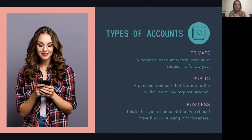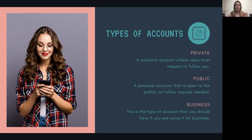There are three types of Instagram accounts. You can have a personal private account where you have to request to follow someone and they have to give you permission — that's a private account. You can also have a personal public account, which means people don't have to request to follow you; they just hit follow and can see everything you post. Then the third type, which is what we're talking about today if you're using Instagram for business, is a business Instagram account. If you're currently using a personal account and want to switch it to business, Instagram has that option — you don't have to start a new one.